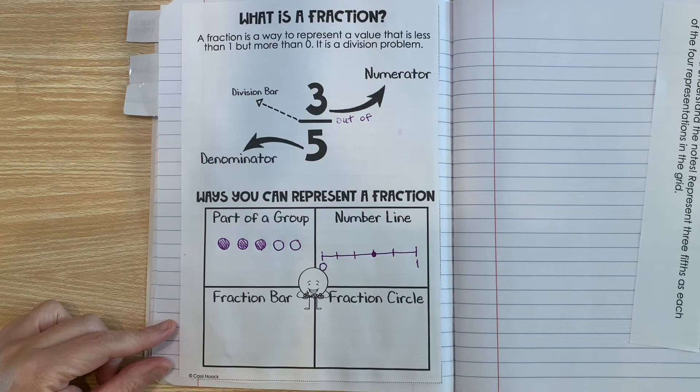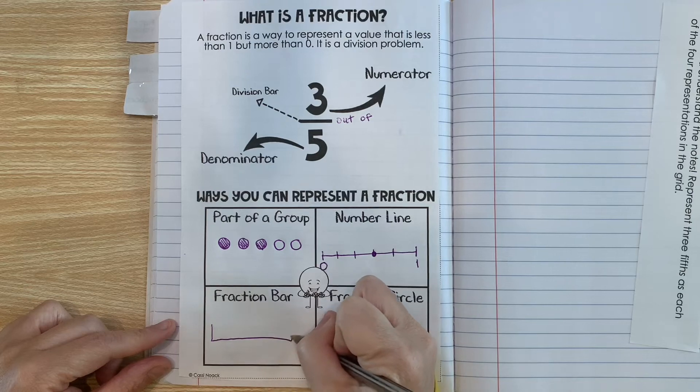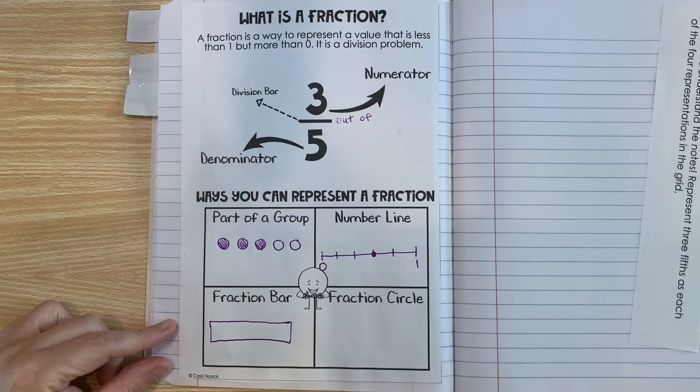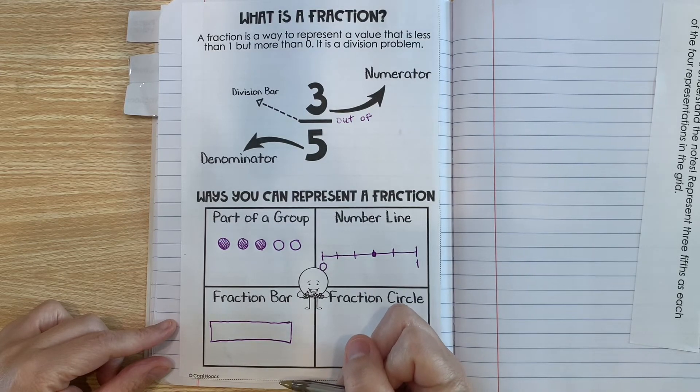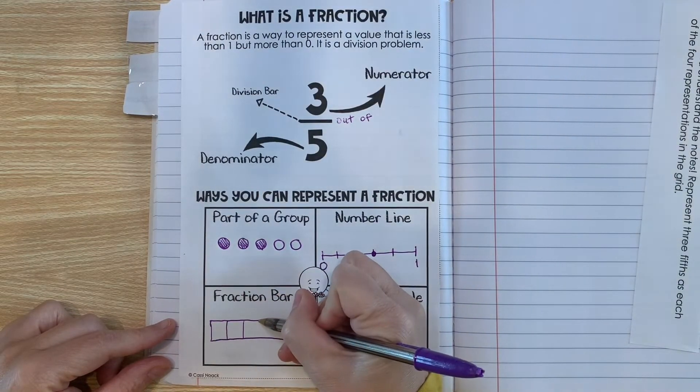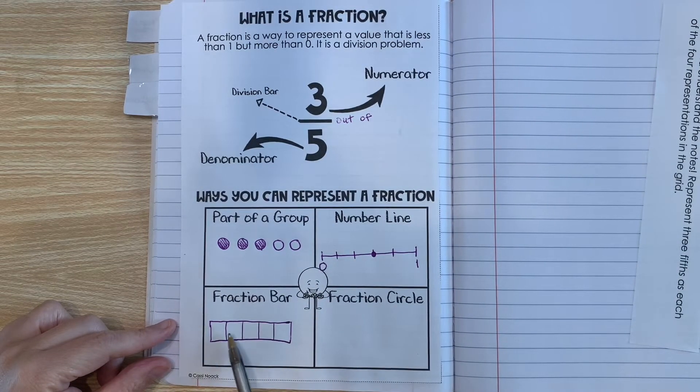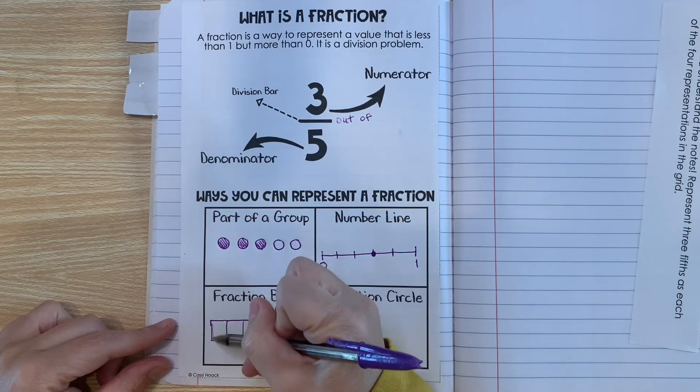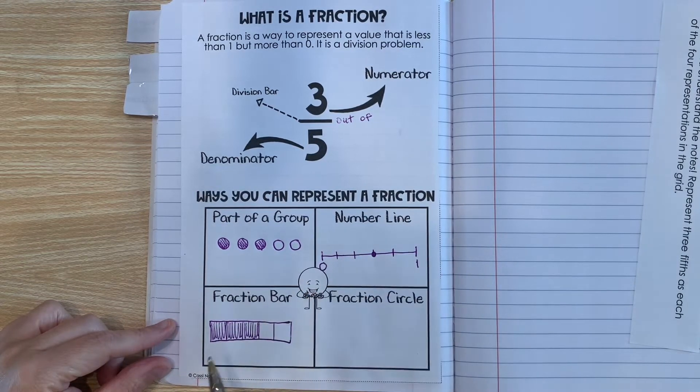So now let's do a fraction bar. So a fraction bar looks like this. And it has been broken into five equal parts. Sometimes it's hard to get them exactly equal, but just do the best you can. So one, two, three, four, five. So now we have five parts in the whole. And we're going to shade three of those parts. One, two, three. So this fraction bar represents three fifths.